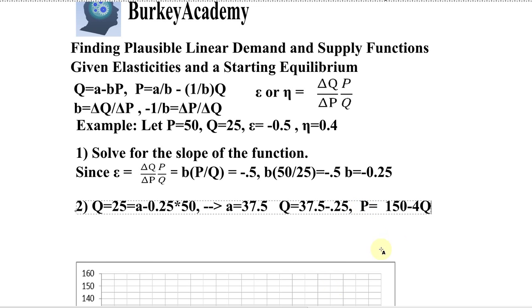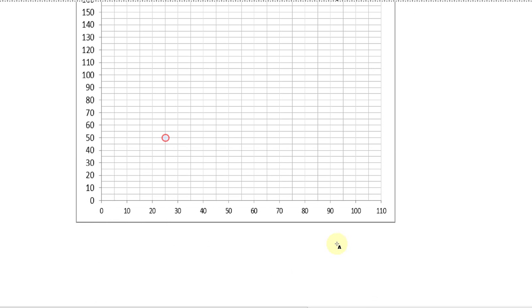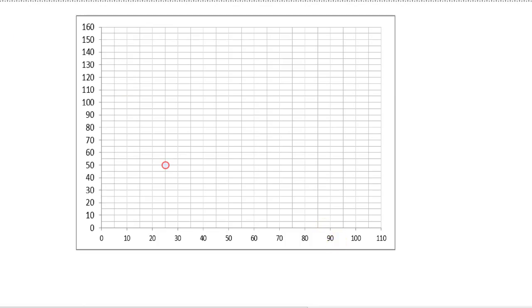So now we can graph that on our axis down here, our Cartesian coordinate plane down here. So 150 minus 4Q is going to give us a line like this, and it goes right through that starting point, which it has to.